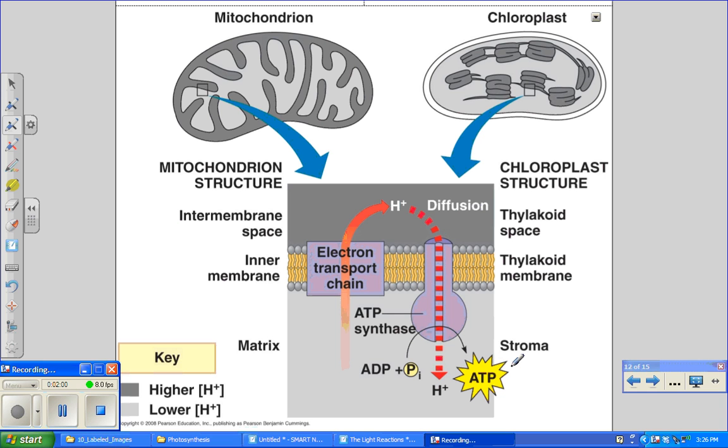Most ATP synthesis in cells occurs by chemiosmosis. This occurs during photosynthesis in the chloroplast, as well as cellular respiration in the mitochondria. We're going to take a moment here to talk about the ways in which chemiosmosis is similar and different in photosynthesis and cellular respiration.